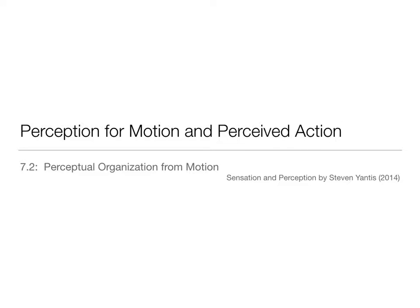Dr. Atchison again, and we are talking still about Chapter 7, Perception for Motion and Perceived Action. This time we're going to be talking about the perceptual organization that we get from motion. This is going to be similar to some of the material we learned in Chapter 4, when we were talking about motion as a salient cue for grouping objects and determining objects in figure-to-ground situations.